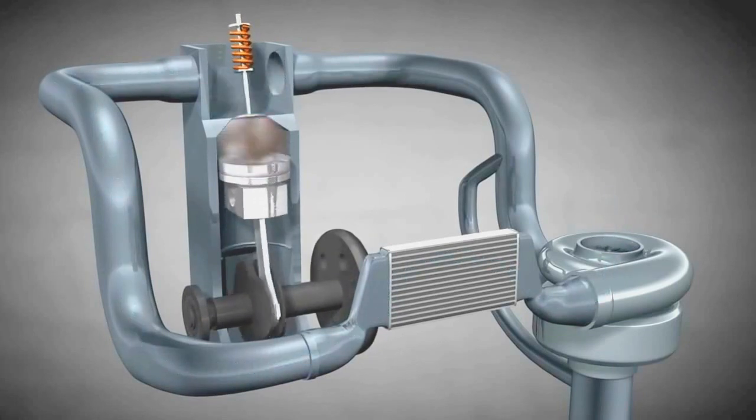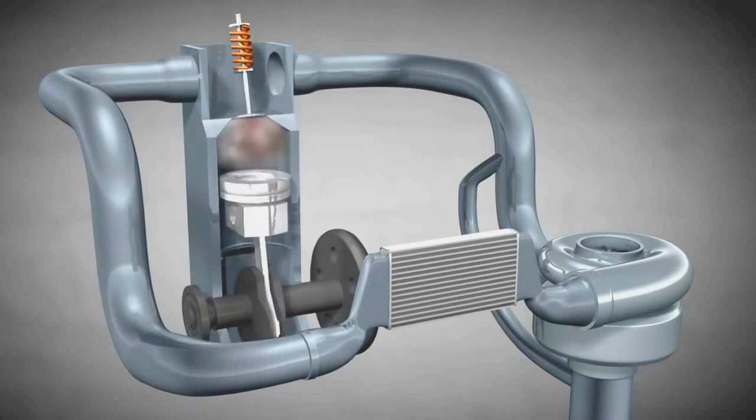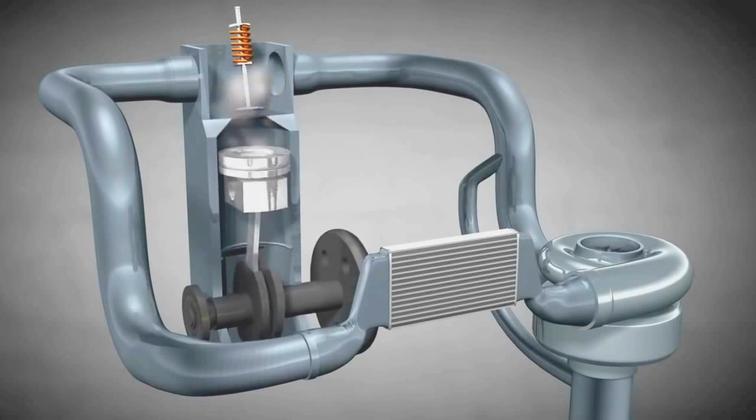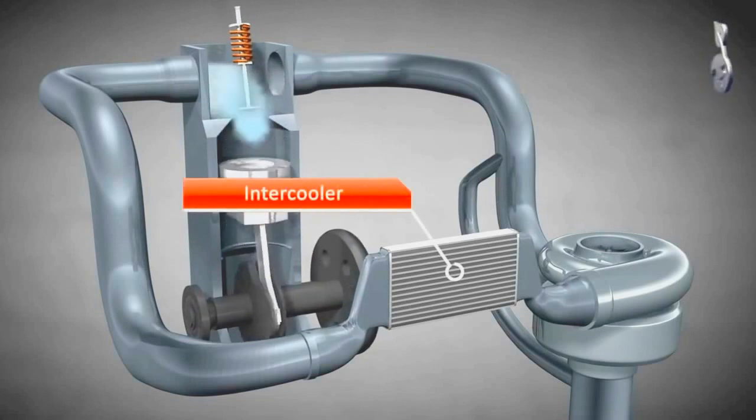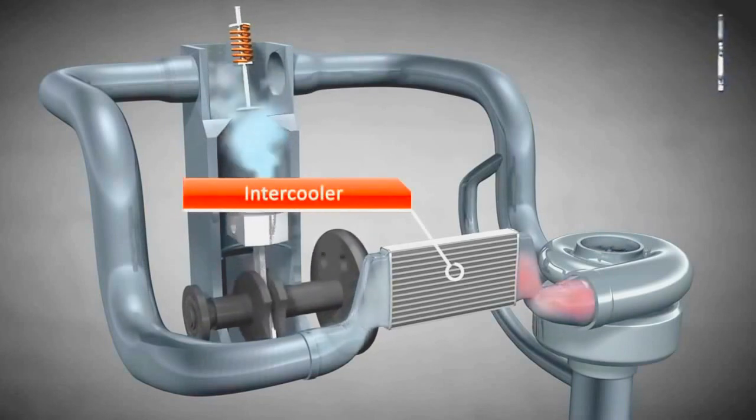Engines that have a turbo are known as turbocharged engines. A turbo only works efficiently if other components are part of the entire system. We need, for example, an intercooler because the air heats up when it's compressed.